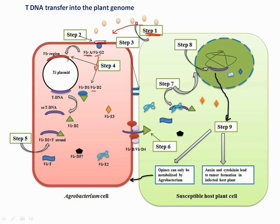VirD2 induces a single-stranded nick in the Ti plasmid and releases the T-DNA. VirD2 then attaches at the 5' end of the T-DNA to form the immature T-DNA complex. VirB and VirD4 form the conjugative pilus, through which the immature T-DNA is transferred into the plant. VirE2, E3, F, and D5 are also passed through this immature T-DNA complex.